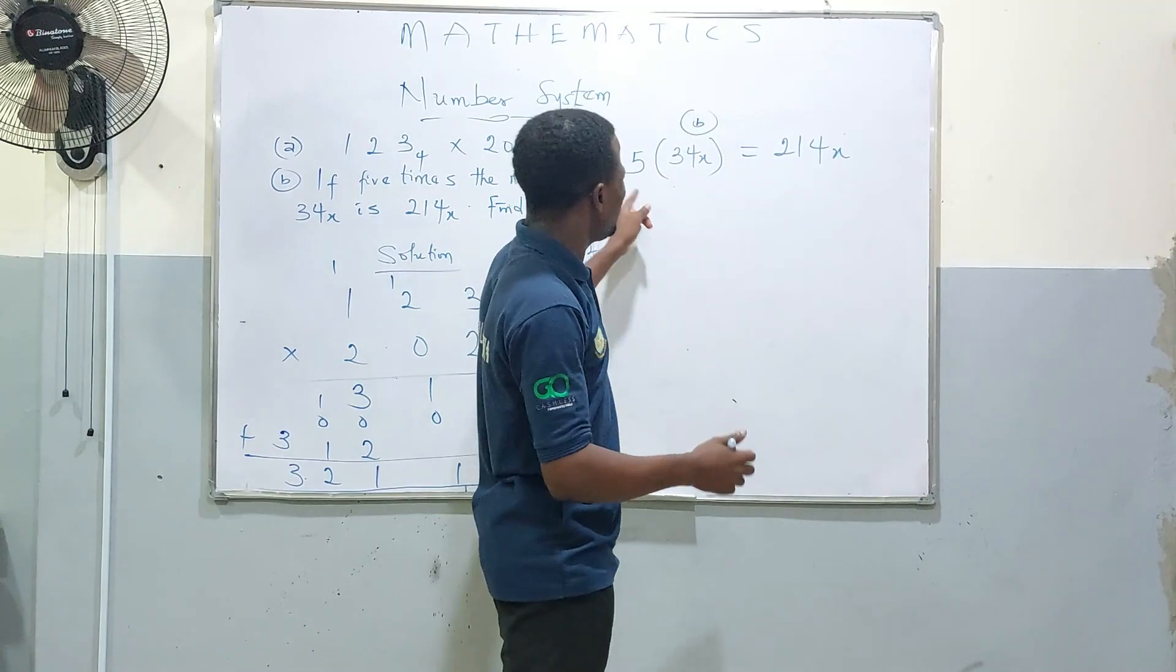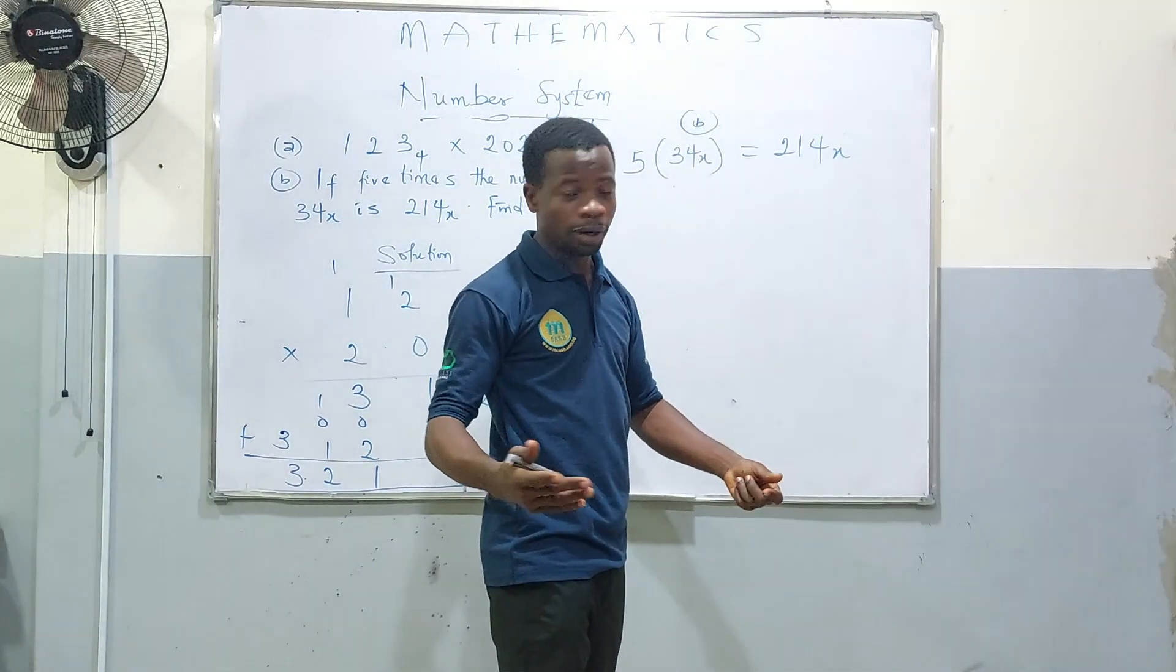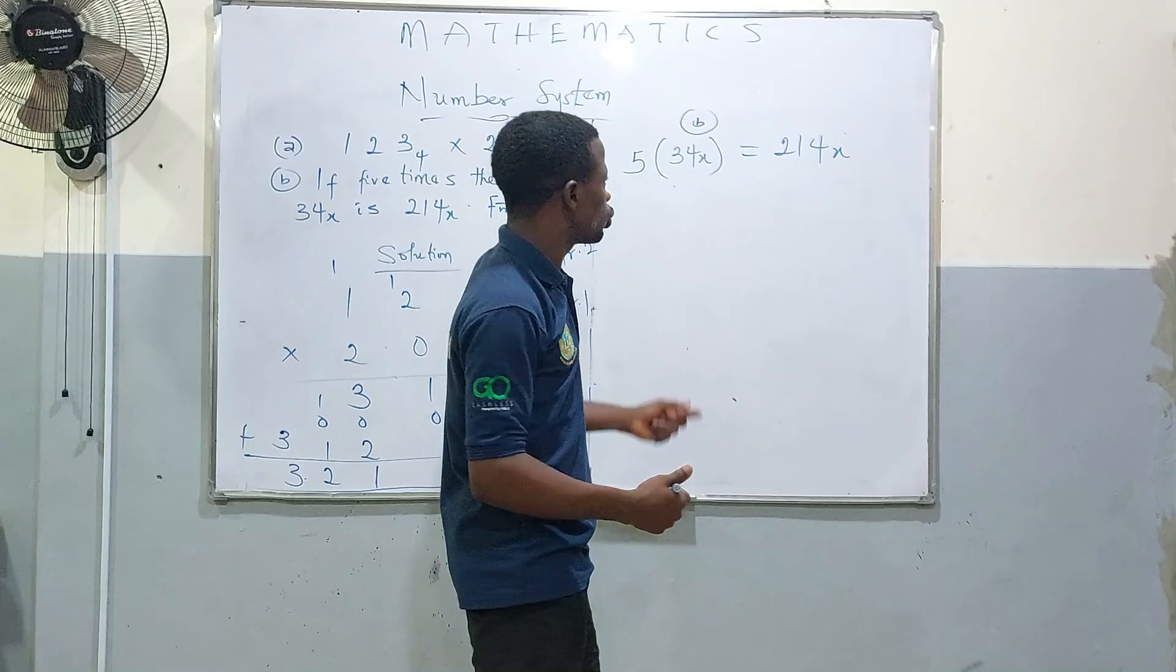x is the base, right? Let's express everything in base 10. This is universal base. Let's make it that way, it's easier. From there we can compare everything.